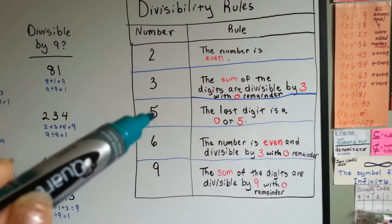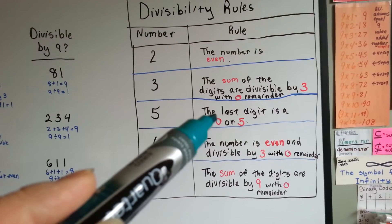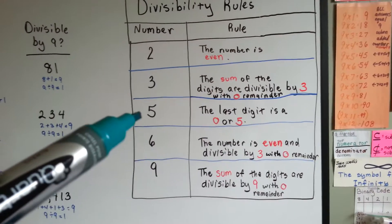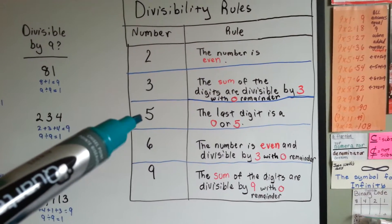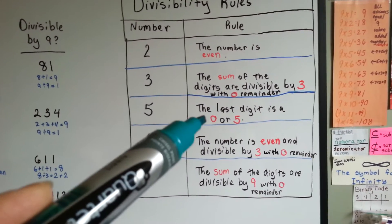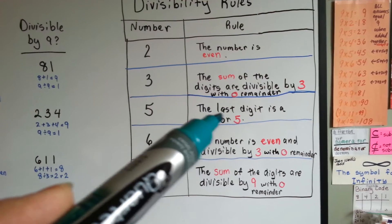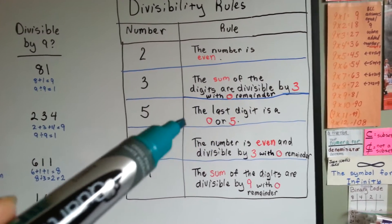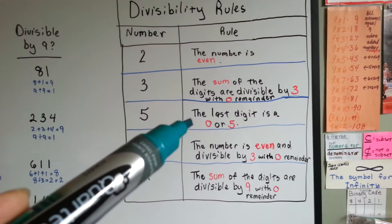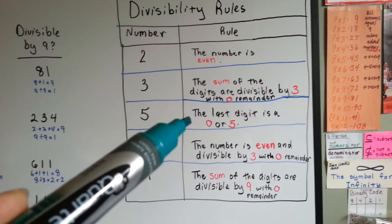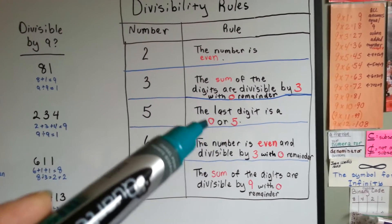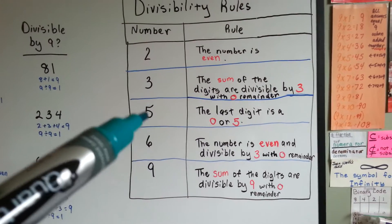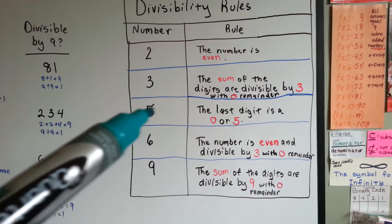You can divide a number by 5 if the last digit is a 0 or 5. Because when you count by 5s in the 5 times table, every number ends with a 0 or 5 — all the multiples end with 0 or 5: 5, 10, 15, 20, 25, 30. So if it ends with a 0 or 5, you can divide it by 5.